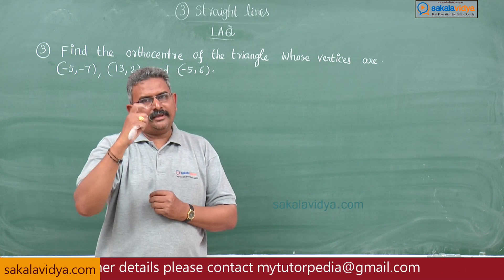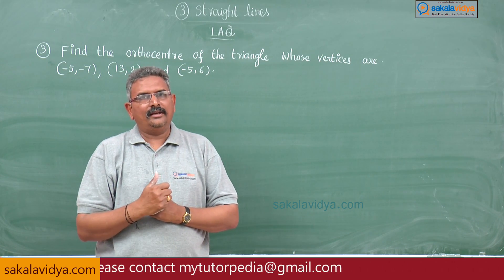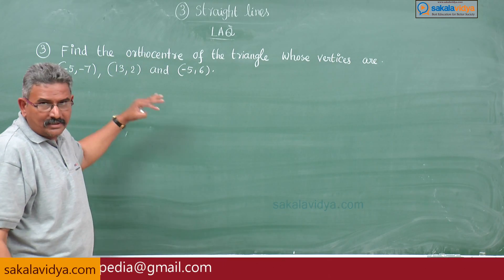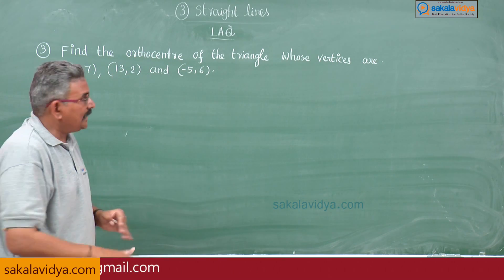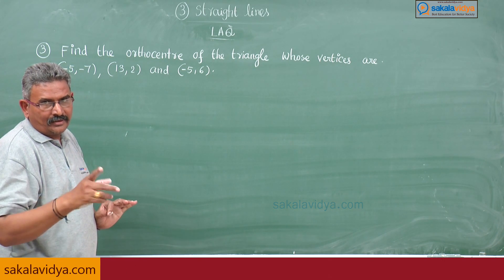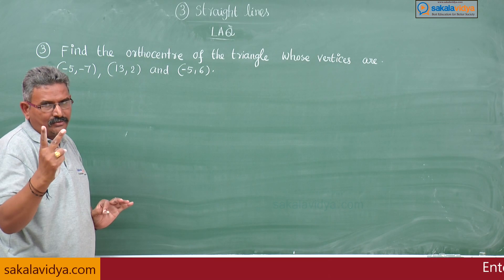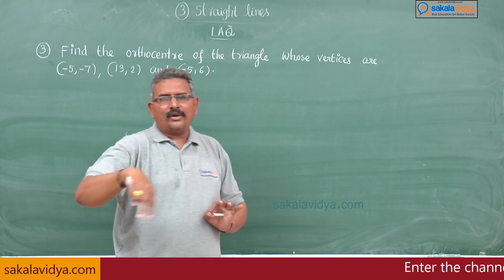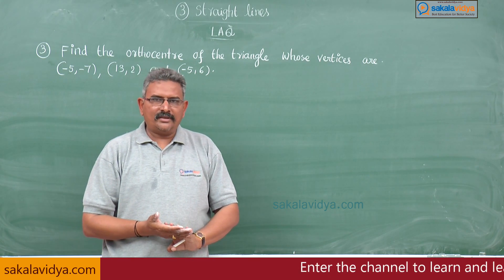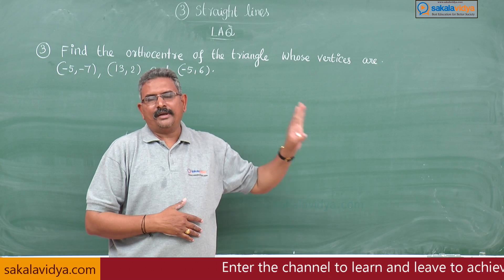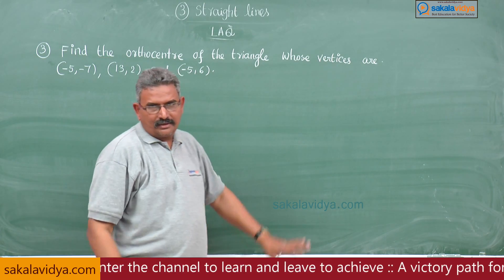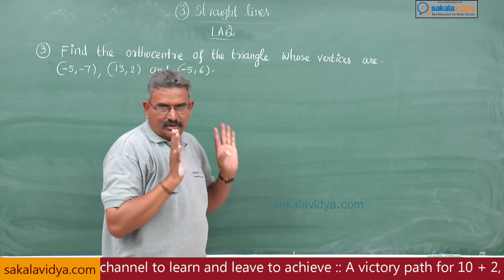By definition of the orthocenter of the triangle, we can solve this problem. The vertices are given, and with the help of vertices we can find equations of any two altitudes. If we solve those two equations of altitudes, we get the orthocenter — the point of concurrence of the three altitudes.